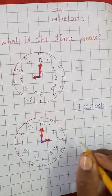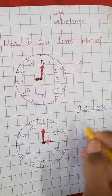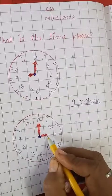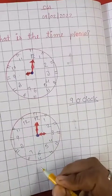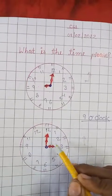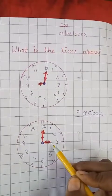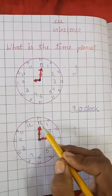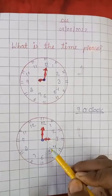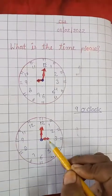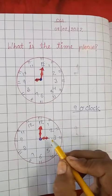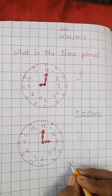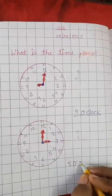Next, what is the time please? The short hand is at 3 and the long hand is at 12. So the time is 3 o'clock. Write here in the answer, 3 o'clock.